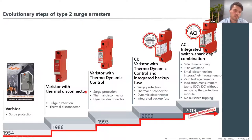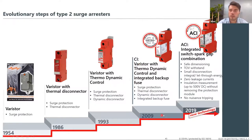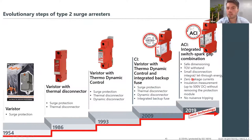Our first Type 2 SPD, which was varistor-based, was manufactured in 1954. Throughout the years, new technologies were integrated. In 2009 we launched CI — you no longer had to worry about prefusing the SPD. In 2019 we launched the ACI — Advanced Circuit Interruption — which is the integrated switch spark gap combination.